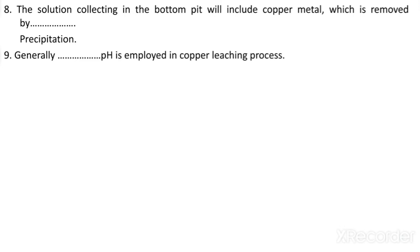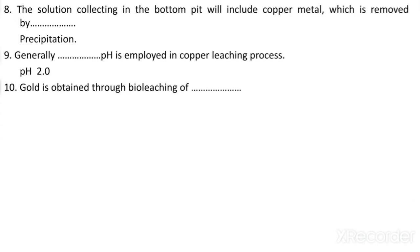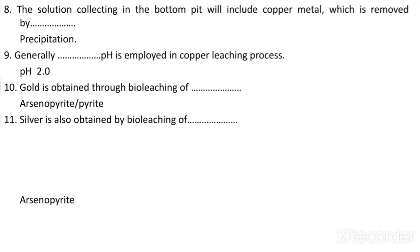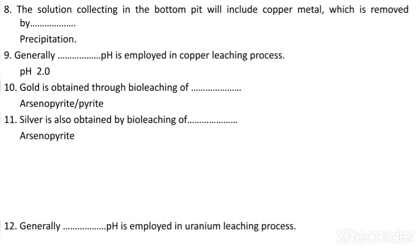The pH used in the copper leaching process is 2. Gold is obtained through bioleaching of arsenopyrite or pyrite. Silver is also obtained from the bioleaching of arsenopyrite.